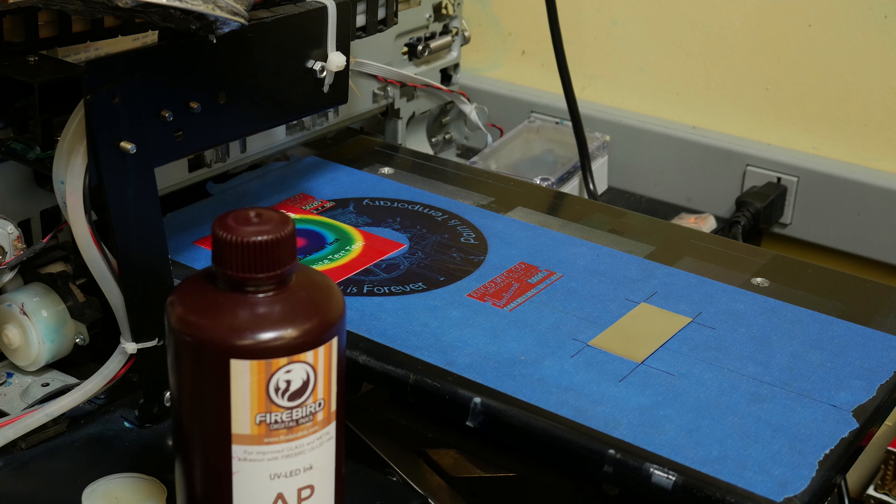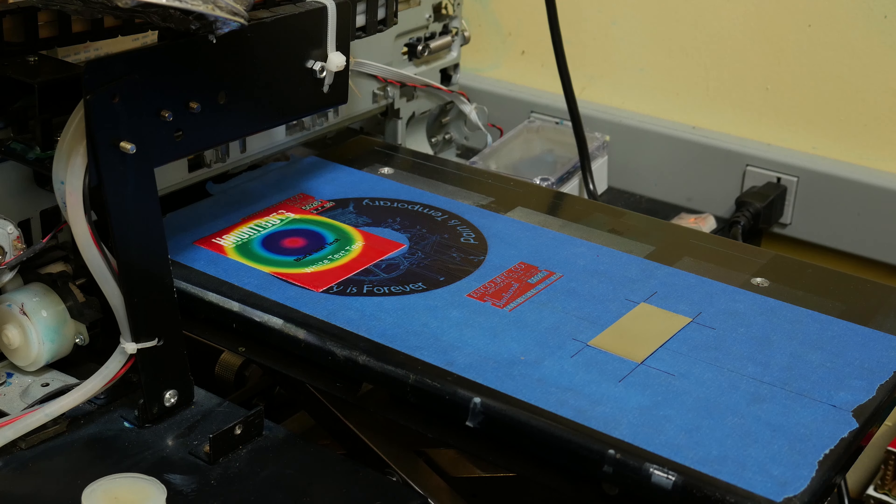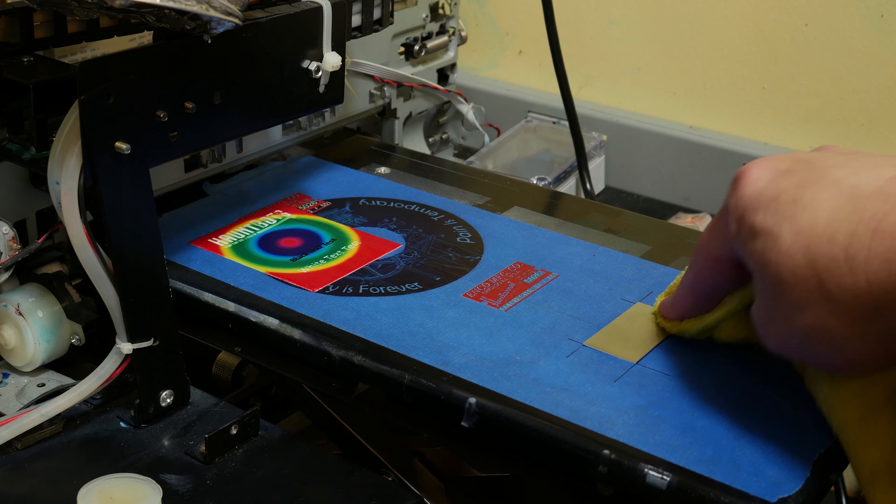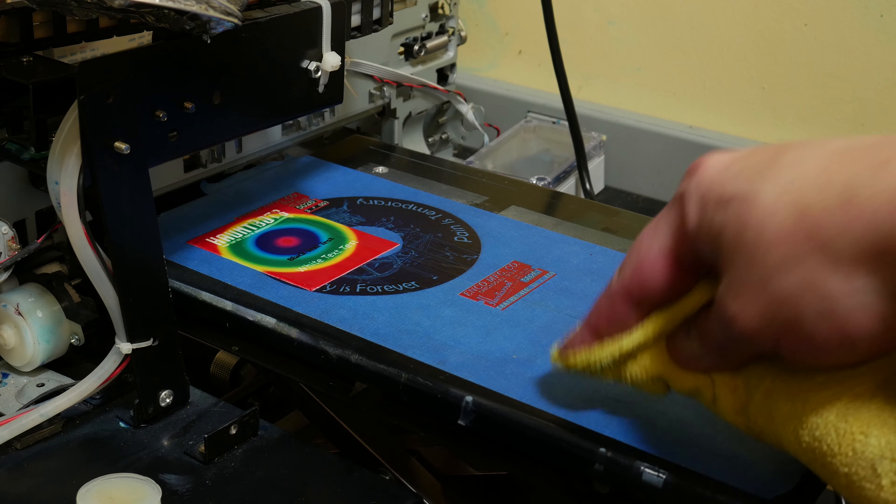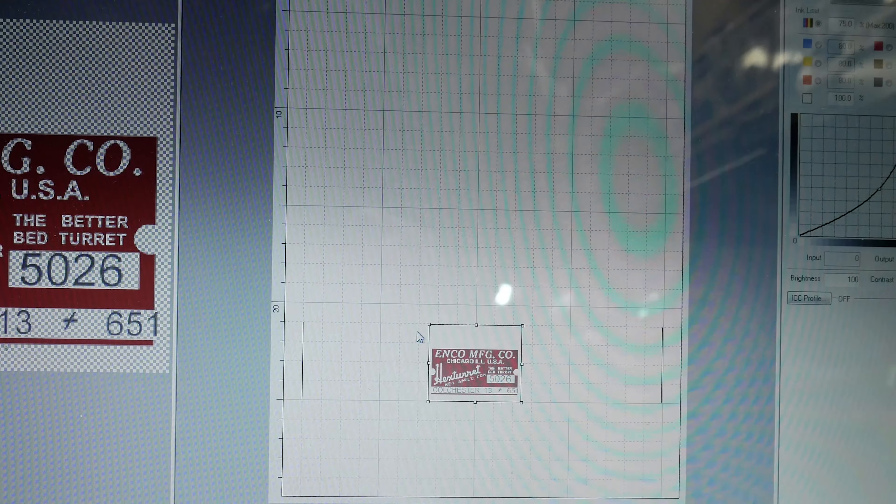And then I'm going to hit it with a chemical called an adhesion promoter. It's provided by the ink manufacturer. I think it's literally just a degreaser to help the ink stick better. Then we just open up the artwork in our printing software.